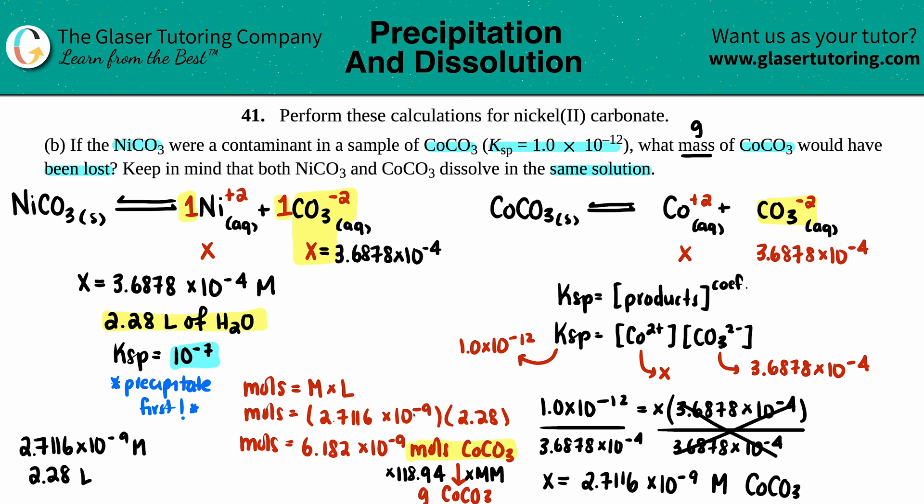I'll do three sig figs: 7.35 times 10 to the negative seventh grams. That's the mass of the CoCO3 that would have been lost. Let me write it bigger so you can see: 7.35 times 10 to the negative seventh grams of CoCO3, and that is your final answer.